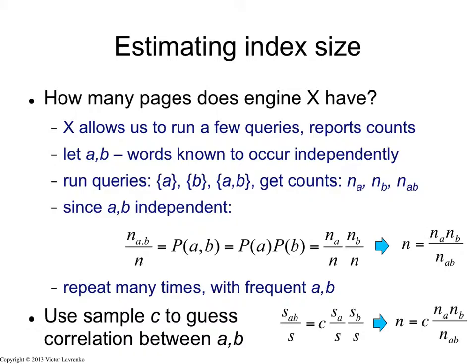So what I'm going to do is I'm going to run three queries. I'm going to run query a, query b, and query a,b together. And I'm going to record the number of results that search engine X gives me. So these are going to be N of a, N of b, and N of ab for the number of matches for query a and b together.